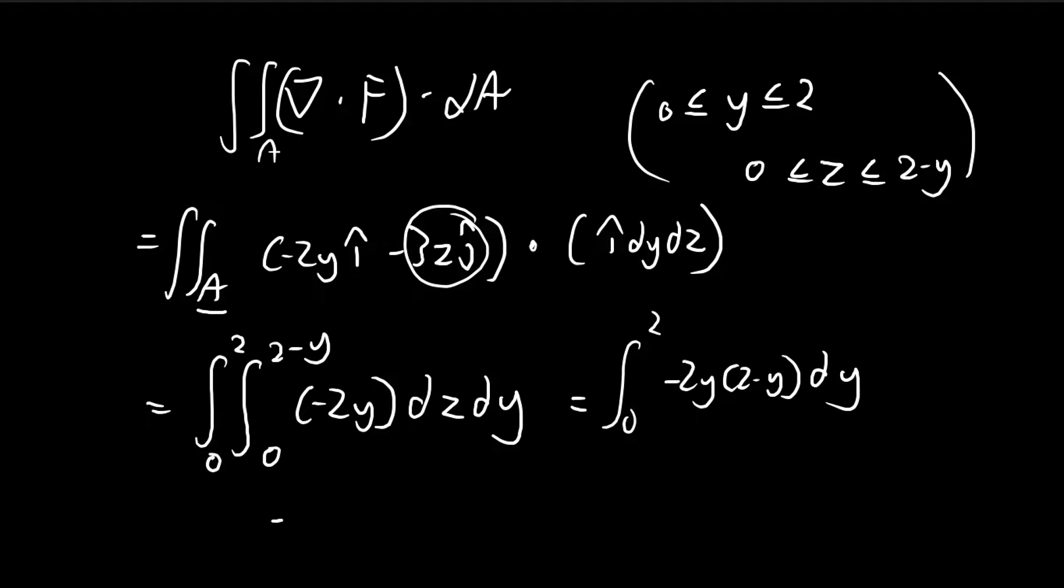So we just do the integration with respect to z. And then for y, we have negative 4y, so that becomes negative 2y squared once we integrate it. Then we have a 2y to the power of 2, that becomes 2y to the power of 3 divided by 3. So you get 2 times 2 times 2, that's minus 8, plus 2 to the power of 4, that's 16 over 3. You can see this is negative 24 over 3 plus 16 over 3. So this is actually equal to negative 8 over 3. So this is the answer.